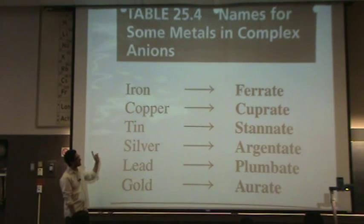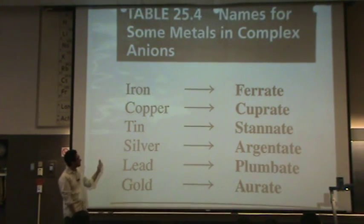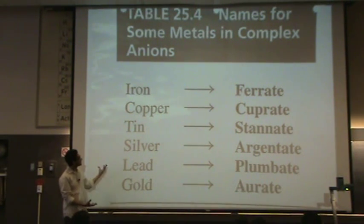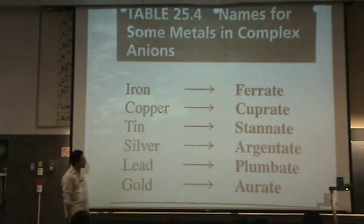Copper — it's Cu, which comes from cupra or cuprate. Tin comes from Stan, and its symbol is Sn. Silver is Ag, from Argentina — silver is found there.